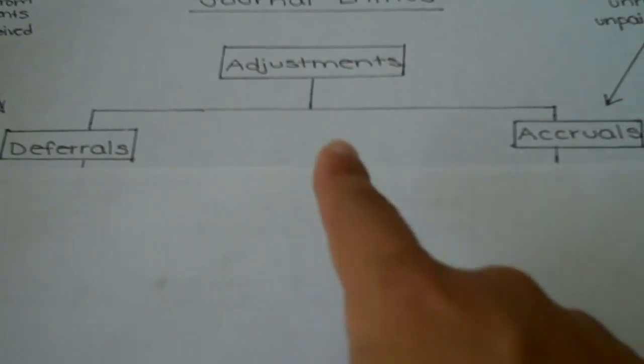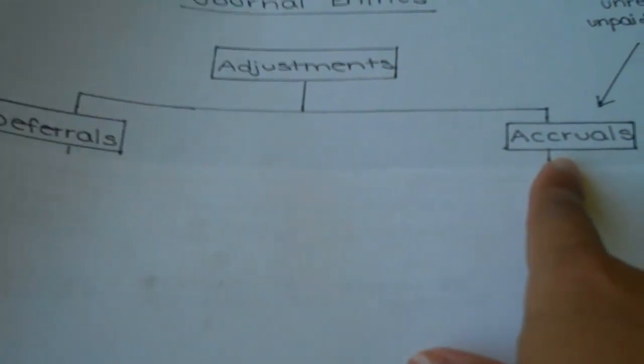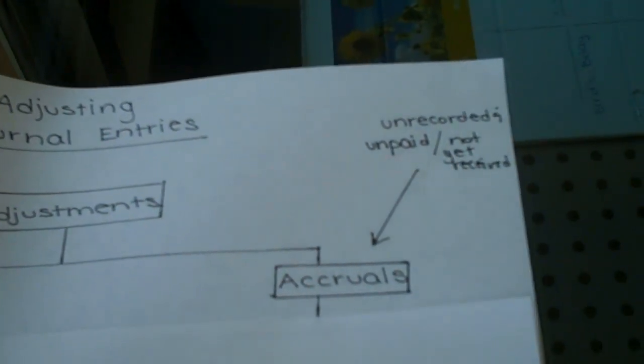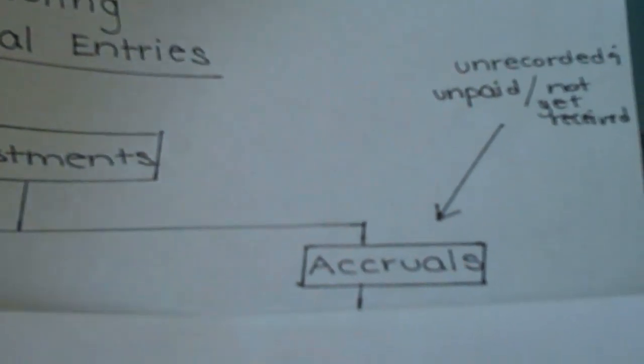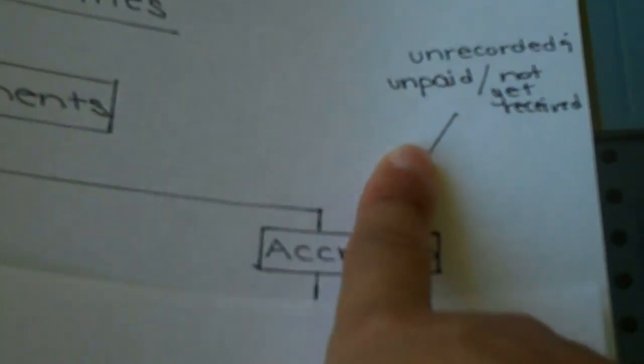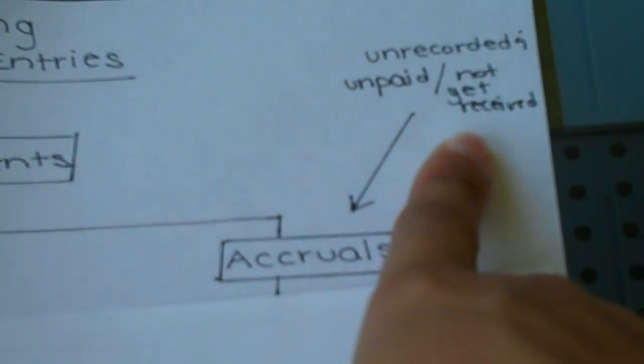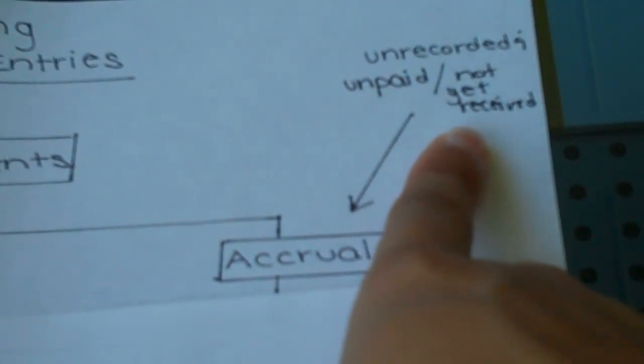Now we'll move on to the second category of adjustments, known as accruals. Accruals are items that are unrecorded and unpaid as of the end of the accounting period, or in the case of revenue, they're unrecorded and not yet received.